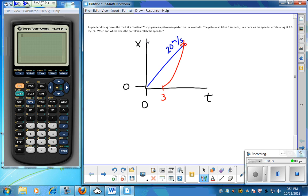So we're going to write the equation for these two lines. The equation for the position of the speeder, since it's a nice constant velocity, is just going to be the velocity times the time. So it's just going to be 20 times T for the speeder.